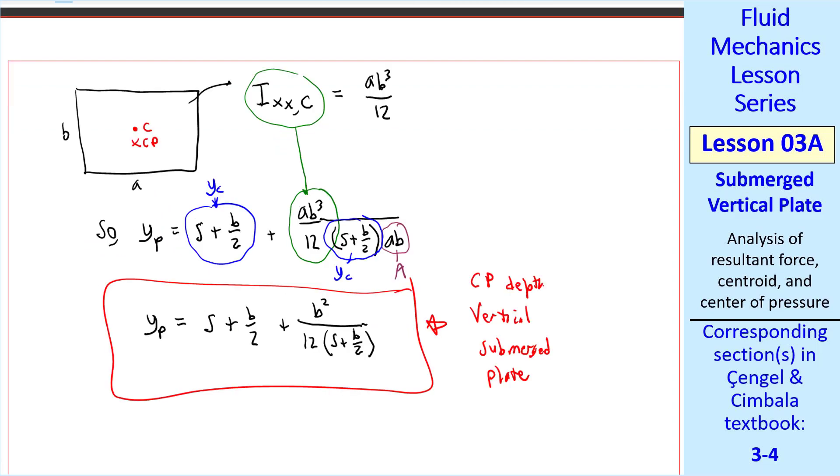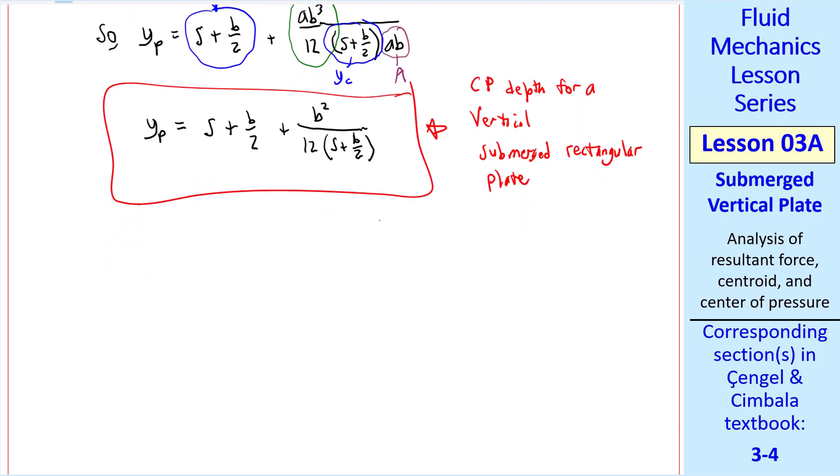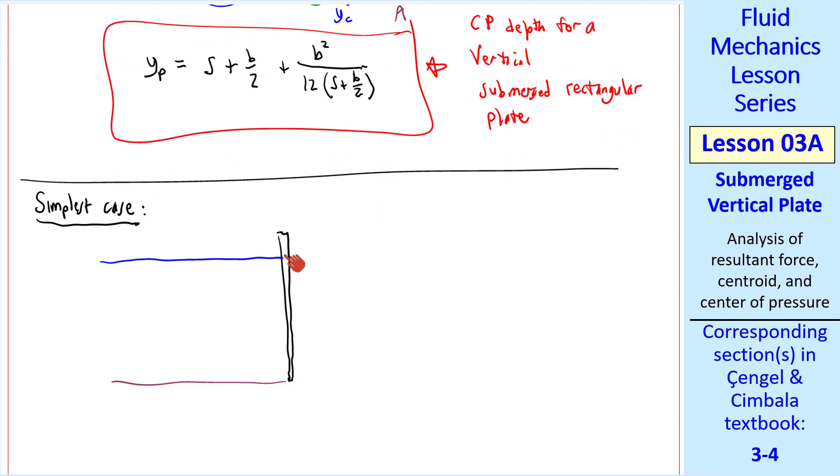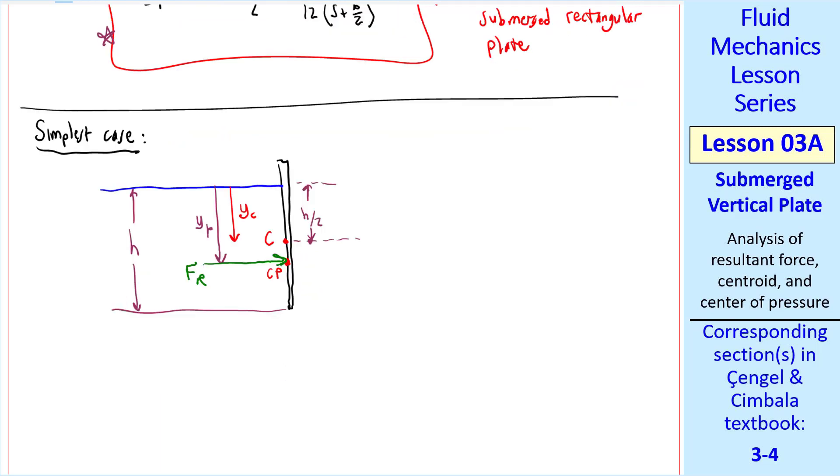Now let's return to our swimming pool example, our container. That is the case where the vertical wall extends all the way up to or even through the surface of the water. We call the depth H. So YC is halfway down the plate, and YP is given by this expression above. Recall that the resultant force acts at the center of pressure.